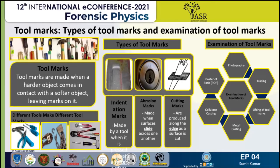Cutting marks are a combination of compression and sliding. Cutting marks are a result of pressure being applied at both sides of an object and are often associated with scissors, wire cutters, etc. When used with these tools, the tool can leave behind marks and striations along the cut edges of the material.